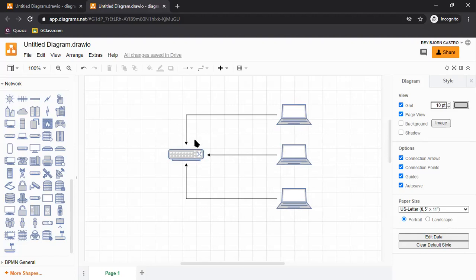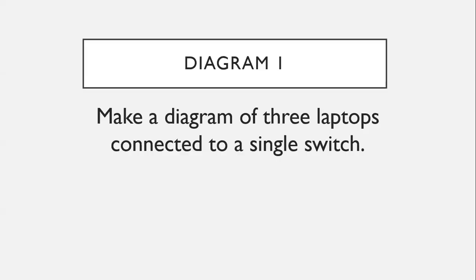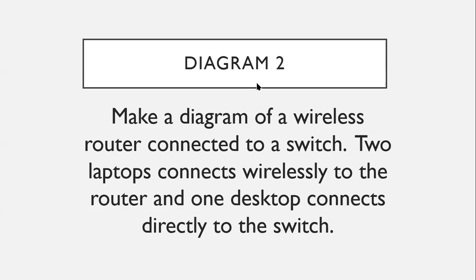Now I want you to show me your own version of diagram one. For diagram two, make a diagram of a wireless router connected to a switch, where two laptops connect wirelessly to the router and one desktop connects directly to the switch.